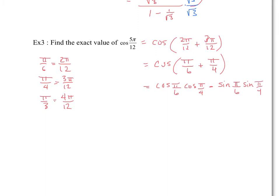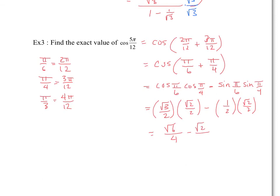We know these exact values: cos(π/6) = √3/2, cos(π/4) = √2/2, sin(π/6) = 1/2, and sin(π/4) = √2/2. Multiplying gives √6/4 minus √2/4. Since they share the same denominator, the exact value of cos(5π/12) is (√6 − √2) over 4.